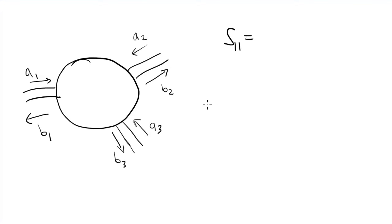So to find S11, what we want to do is drive port 1. So we have A1 coming into port 1. And then to make sure that nothing is coming in from the other ports, what we do is terminate them. And then what we look at is B1 coming out of port 1. And whatever we've got on port 1, we kind of assume that it's perfectly driving A1 and perfectly sucking in B1. So that's our equation.